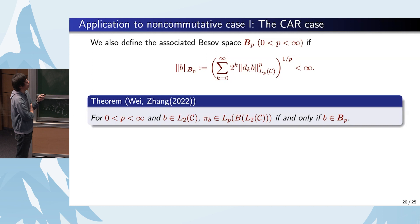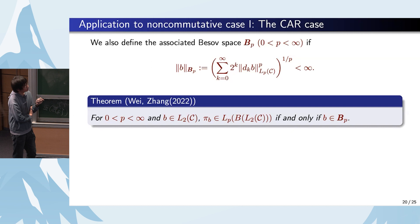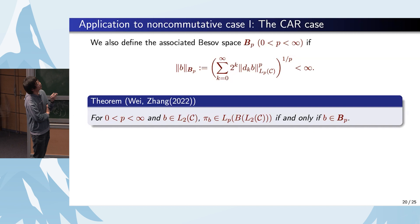We define the associated Besov space BP, where the coefficient is 2^k and the norm is finite. We can describe the Schatten properties of the paraproduct on L²(C): for B in L²(C), pi_B is in S^p(L²(C)) if and only if B is in BP. This theorem describes the Schatten properties in the non-commutative Clifford algebra case.